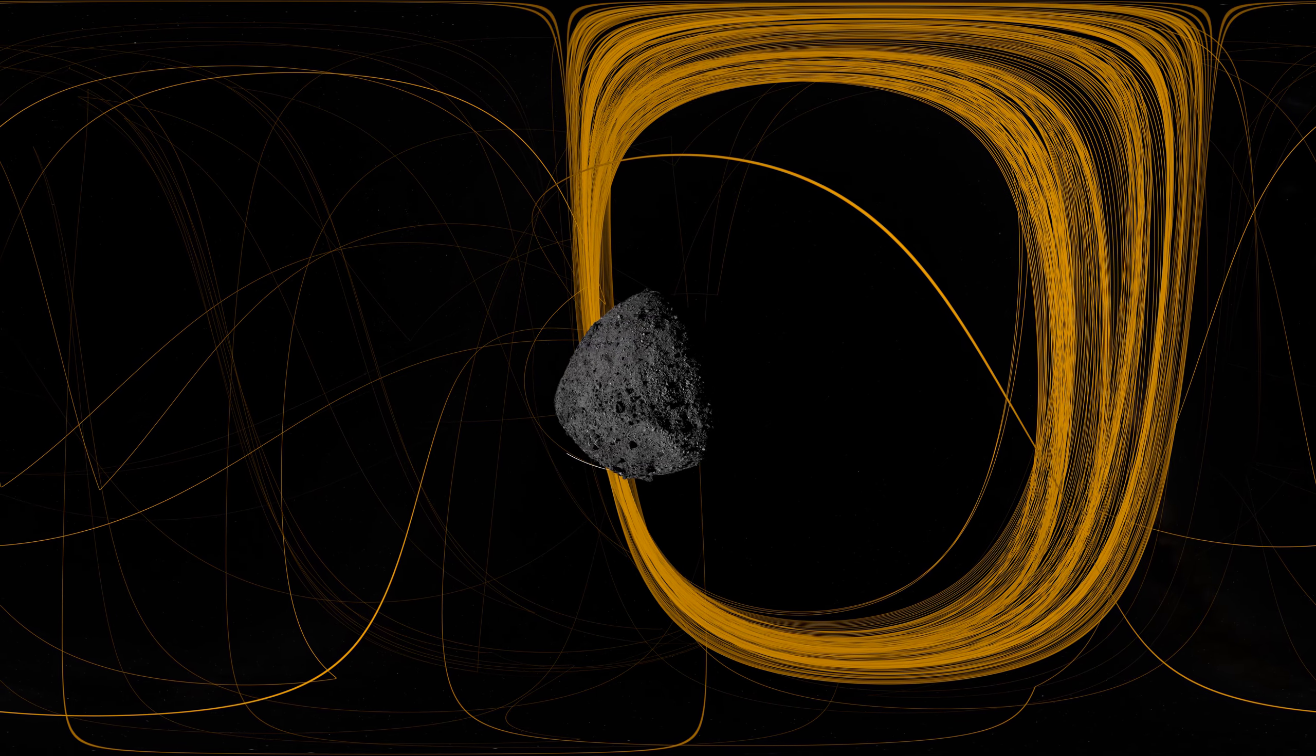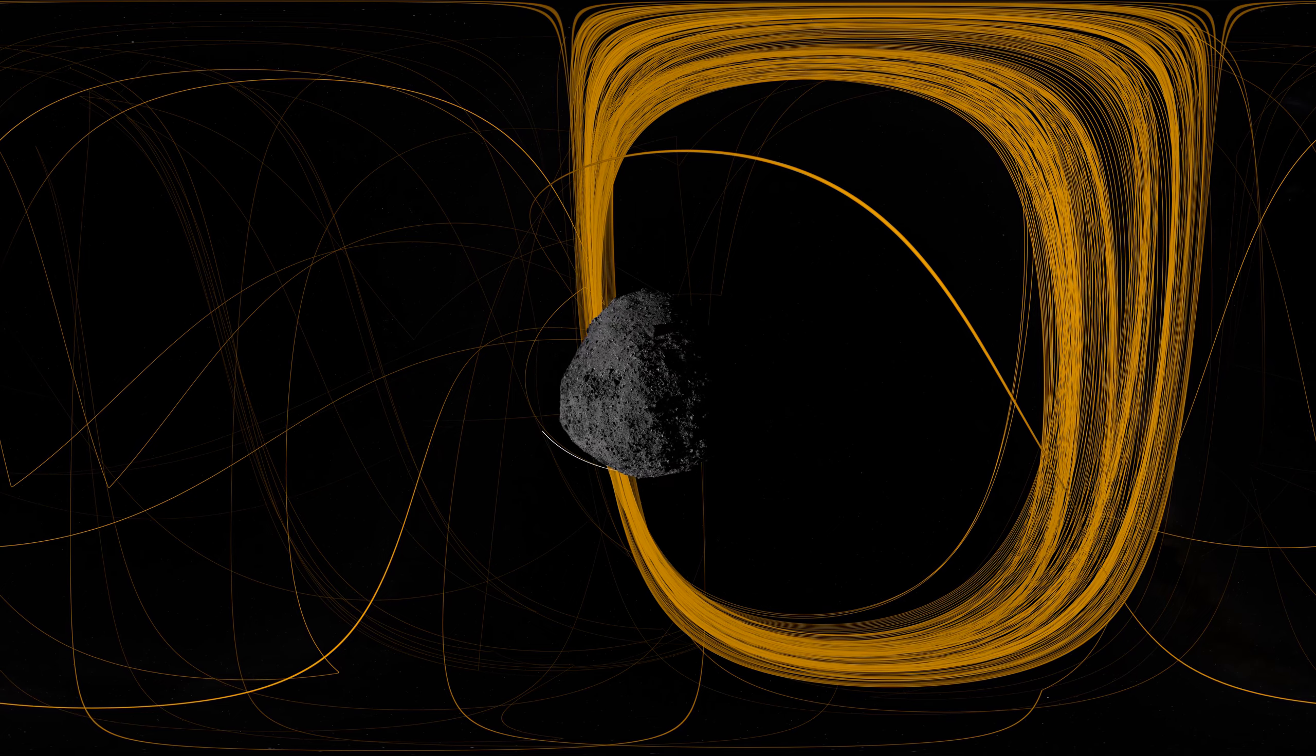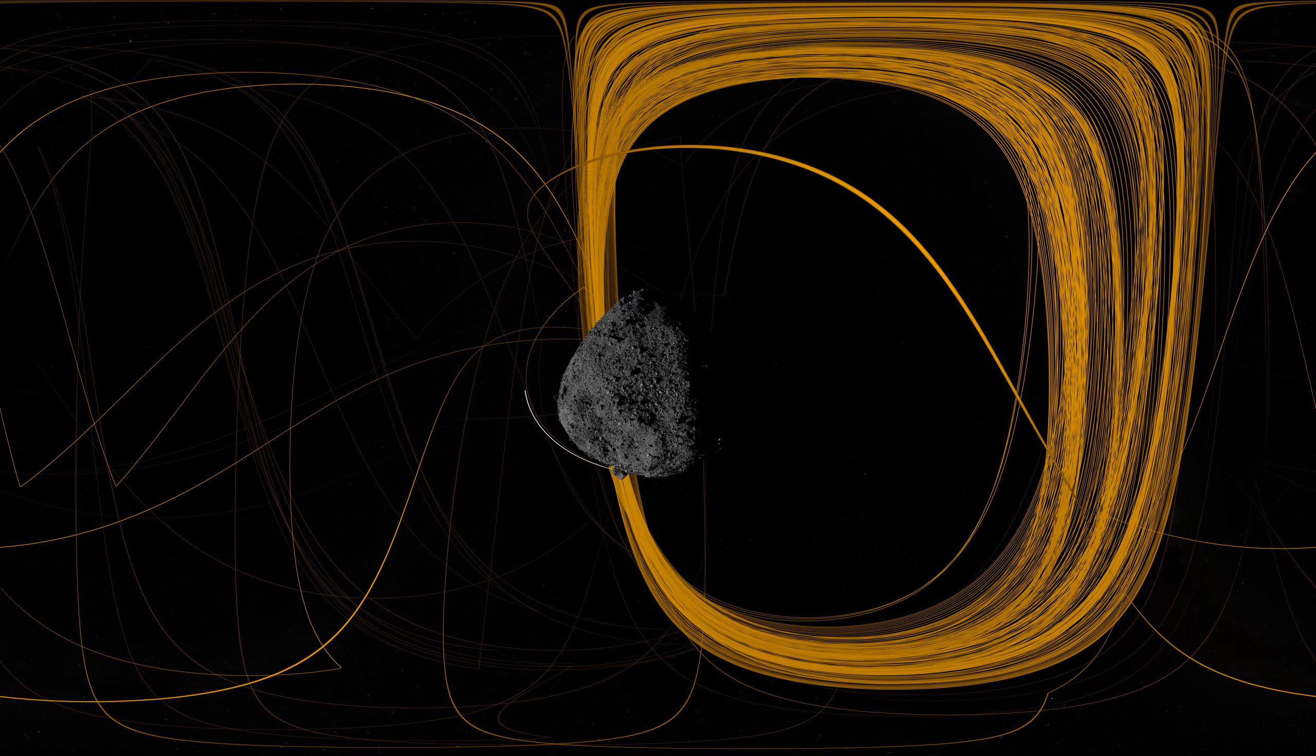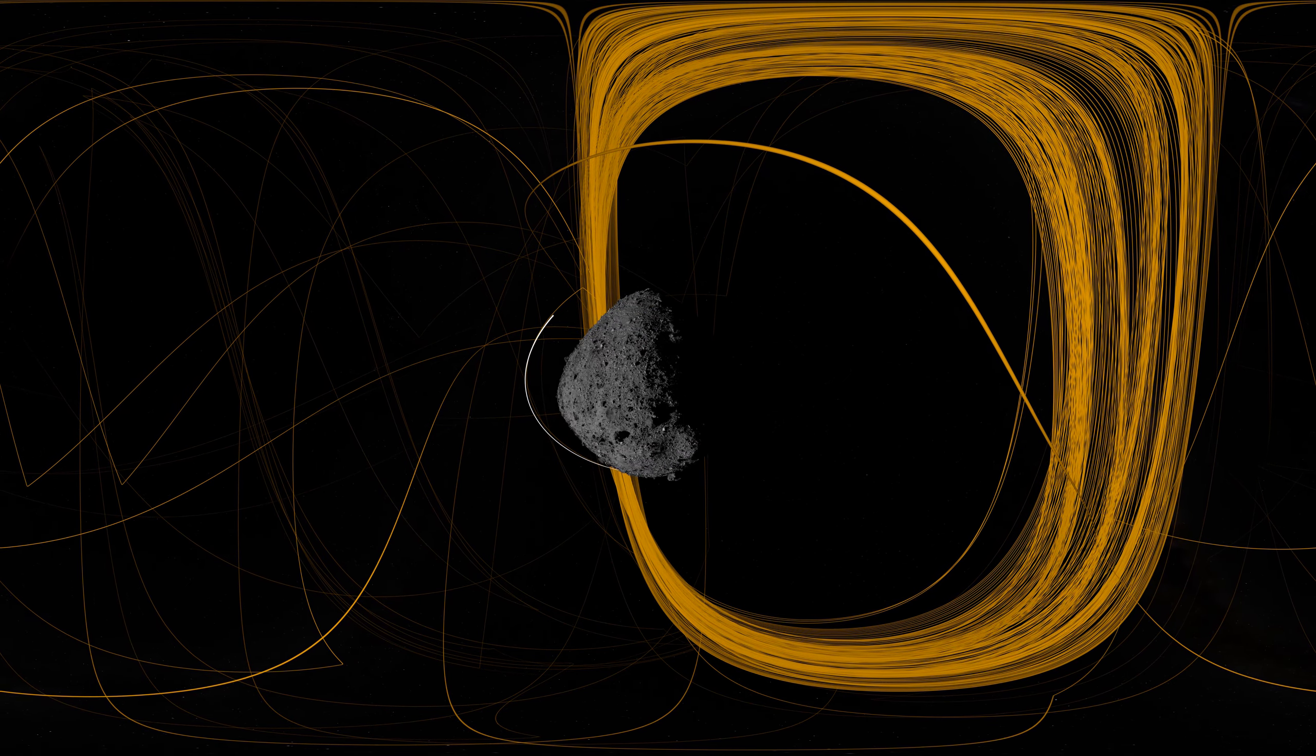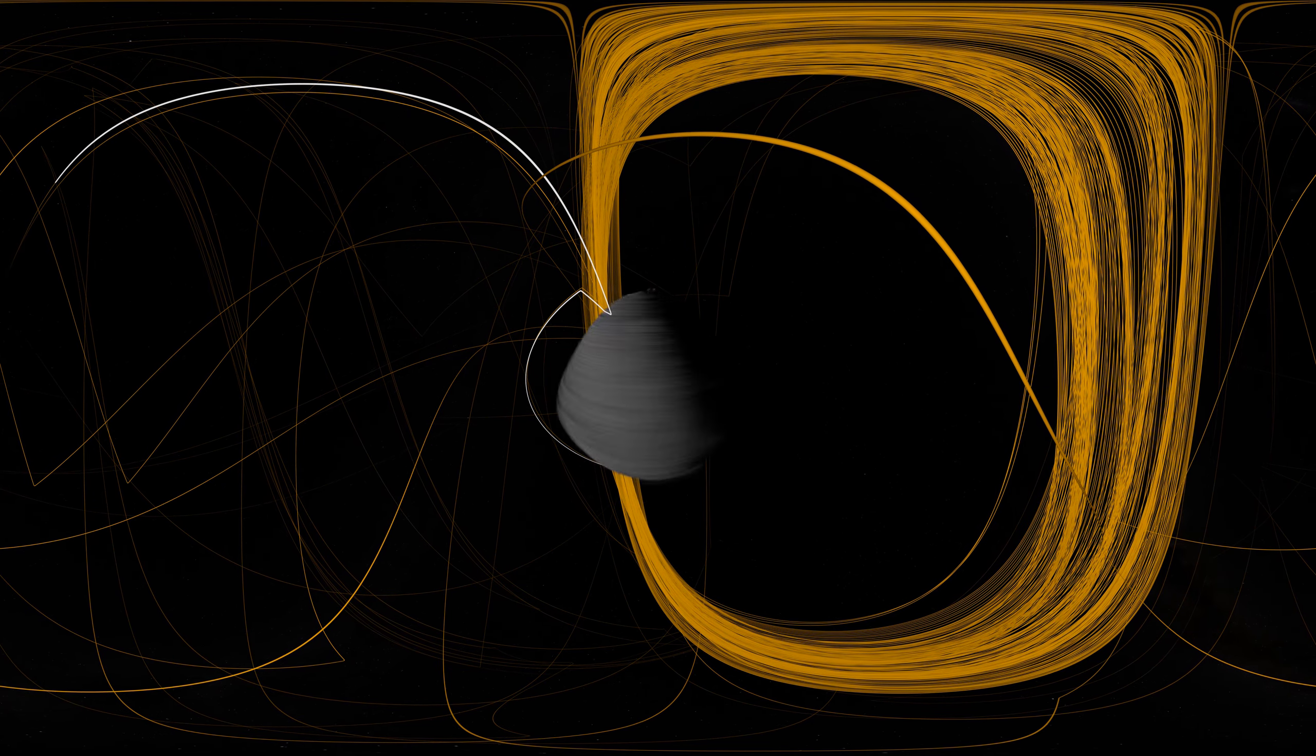On August 11th, OSIRIS-REx departed its home orbit and made a four-hour traverse to Bennu's northern hemisphere, retracing its earlier path. After performing the checkpoint engine burn to begin its descent, it made a second engine burn called matchpoint to match Bennu's rotation before backing away at an altitude of approximately 40 meters.